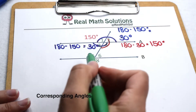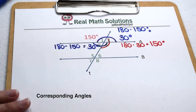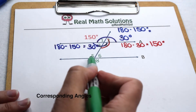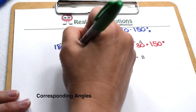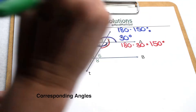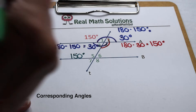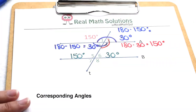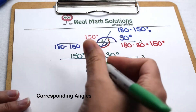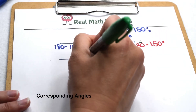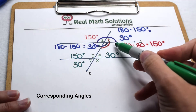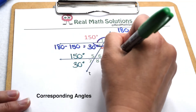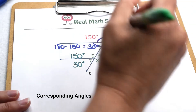To get from our top four angles to our bottom four angles, we can use corresponding angles. Angle one and angle five are corresponding, so angle five is also 150 degrees. Angle two and angle six are corresponding, so six is 30 degrees. Three and seven are corresponding, so angle seven is 30 degrees. Angle four and angle eight are corresponding, so angle eight is 150 degrees.